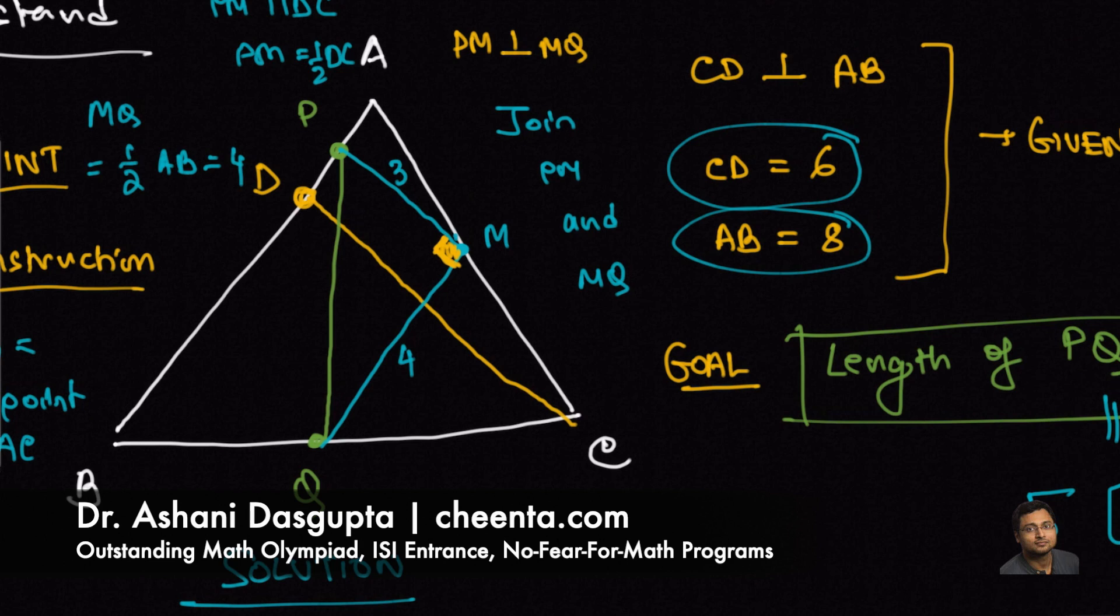So we are almost done. This is a right angle triangle now. And we have this leg as 3, this leg as 4. So use Pythagoras theorem to say PQ is 5.